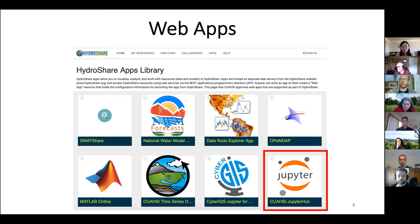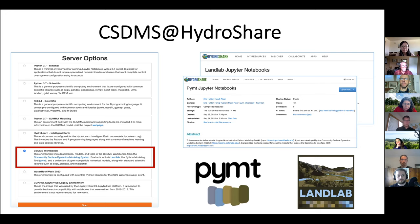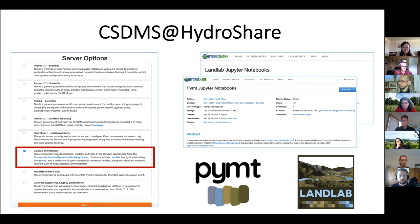HydroShare also includes several web apps to support data visualization, analysis, and modeling. One example is the CUAHSI JupyterHub. On the CUAHSI JupyterHub, there are multiple server options. One of them is the CSDMS Workbench, which is the CSDMS and HydroShare capability. It was implemented to have the CSDMS tools installed, including PyMT and LandLab. There are also other widely used scientific packages installed on this server option, such as Pandas, Matplotlib, and xarray. The notebooks for PyMT and LandLab are available in HydroShare.